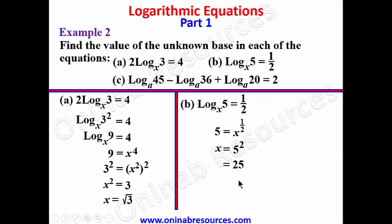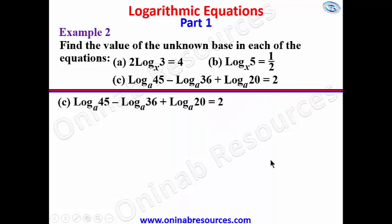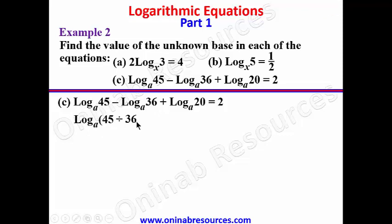For example 2c, we have log 45 to base a, minus log 36 to base a, plus log 20 to base a, equal to 2. Since they have the same base, we apply the laws: subtraction means divide, addition means multiply. This gives us log to base a of (45 divided by 36, times 20) equal to 2, which simplifies to log 25 to base a equals 2.